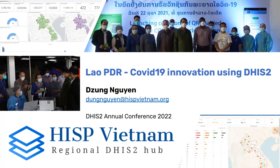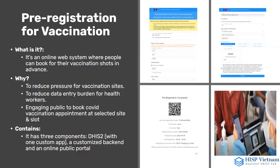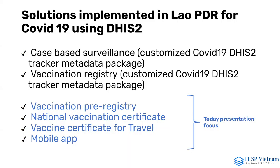Hi everyone. My name is Dung from HIS Vietnam, here with my colleagues John and Sam. Today we're happy to introduce one example of interoperability and innovation we did for Lao PDR — COVID-19 and DHIS2. As background, in Lao we have a case-based surveillance system and a vaccination registry taken from tracker metadata packages. My presentation focuses on the vaccination pre-registration system, the national vaccination certificate, the vaccine certificate for travel, and the mobile app.